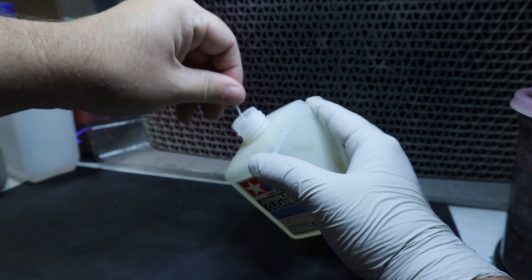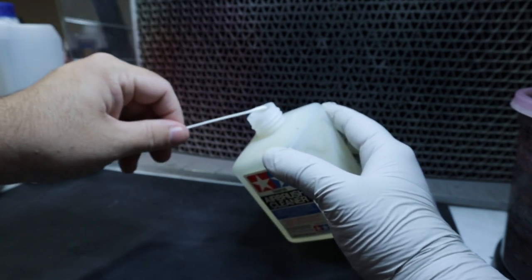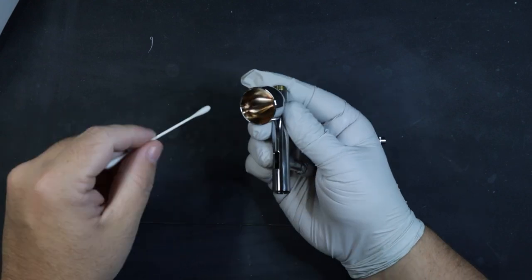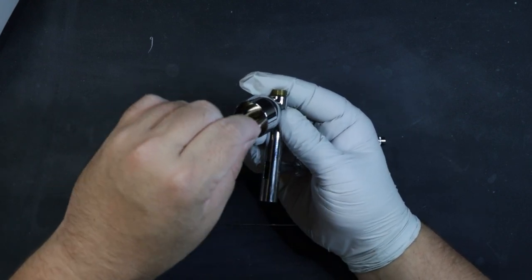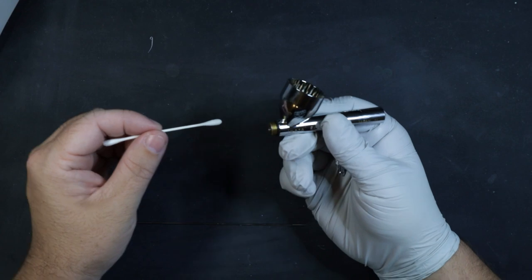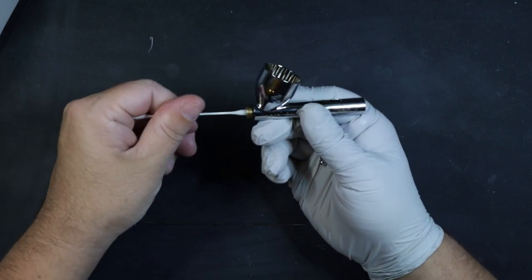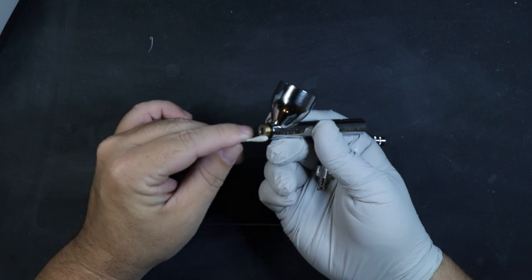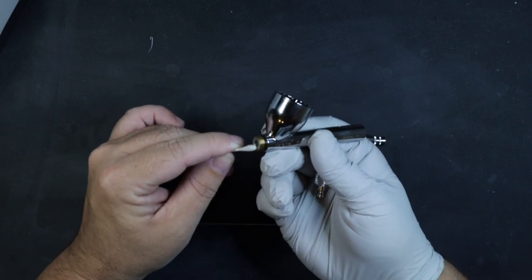With the needle done, we're going to start by dipping our q-tips into our airbrush cleaner. We're going to wipe up any excess paint that's left in the main cup of our airbrush body. Once that's clean, we can move on to the main face where the nozzle and our nozzle cap sit. We can clean out the entrance where the paint comes out, as well as anything on the face or the threads.